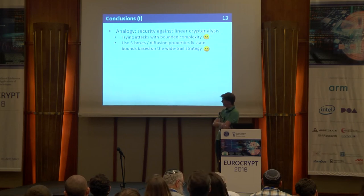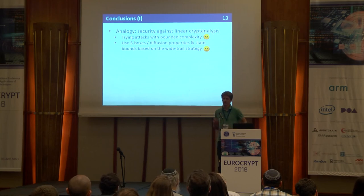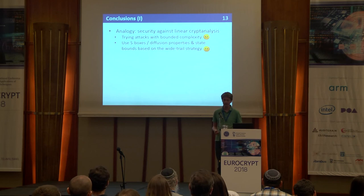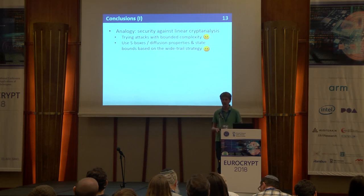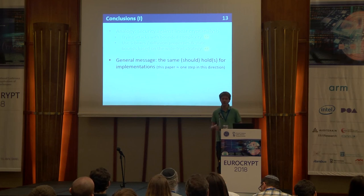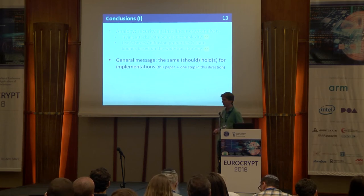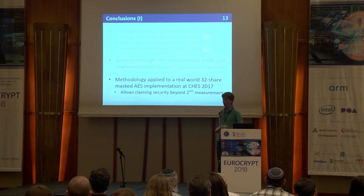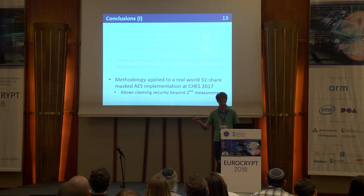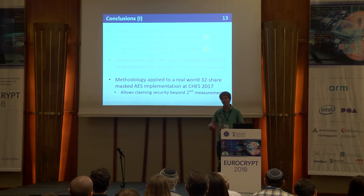For the conclusion, I'd like to start with an analogy: if you design a block cipher and want to claim security against linear cryptanalysis, you don't try many different attacks with bounded complexity. Instead you look at the S-boxes, find a good diffusion layer, make some independence assumptions, and claim security for a number of rounds. Conceptually I don't see why this should be different in the side-channel world, especially now that we have good knowledge of how implementations behave. The paper does a first step in this direction — we applied the methodology to an AES implementation masked with 32 shares, and could claim security up to 2^60 measurements, which I think is the first time we've gone that far.